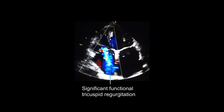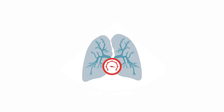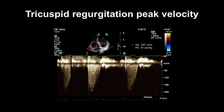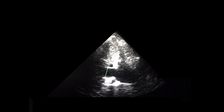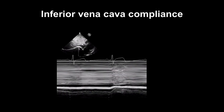Functional tricuspid valve regurgitation may be significant due to the right ventricular dilatation. Increased pulmonary venous pressure leads to pulmonary hypertension. Over time, this can result in permanent increases in pulmonary vascular resistance due to damage to the pulmonary vascular bed. Pulmonary pressure estimation should be performed in all patients with mitral stenosis by measuring the tricuspid regurgitation peak velocity, the inferior vena cava diameter, and assessing inferior vena cava compliance in response to inspiration.